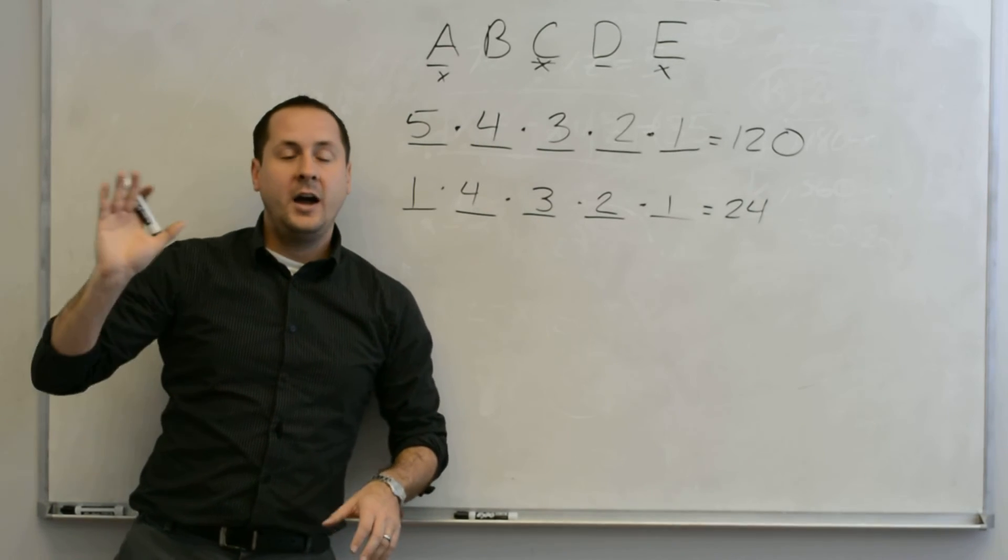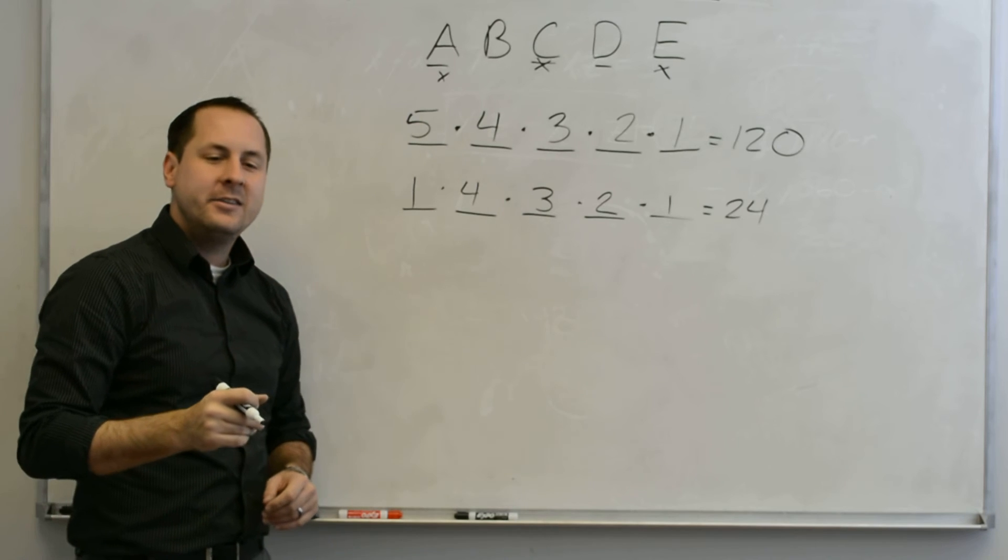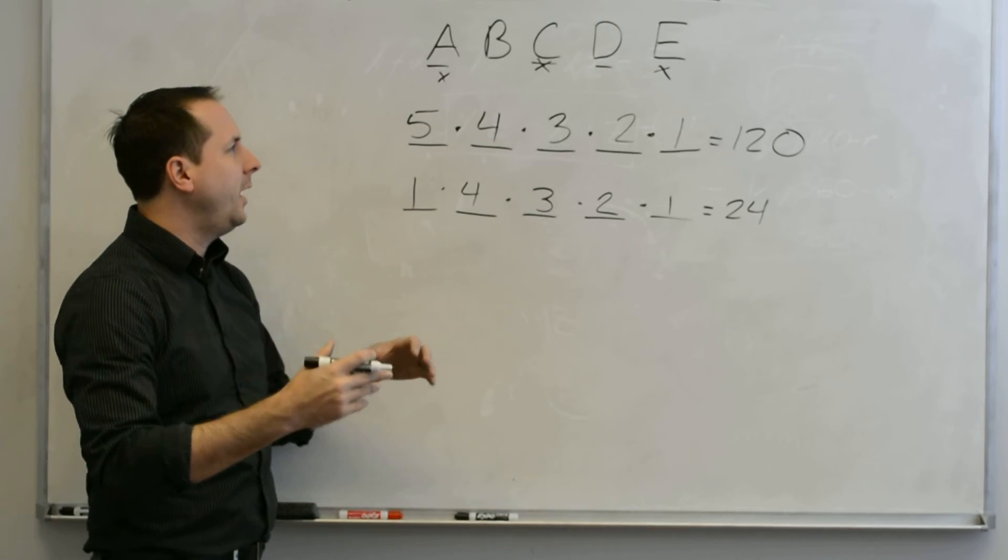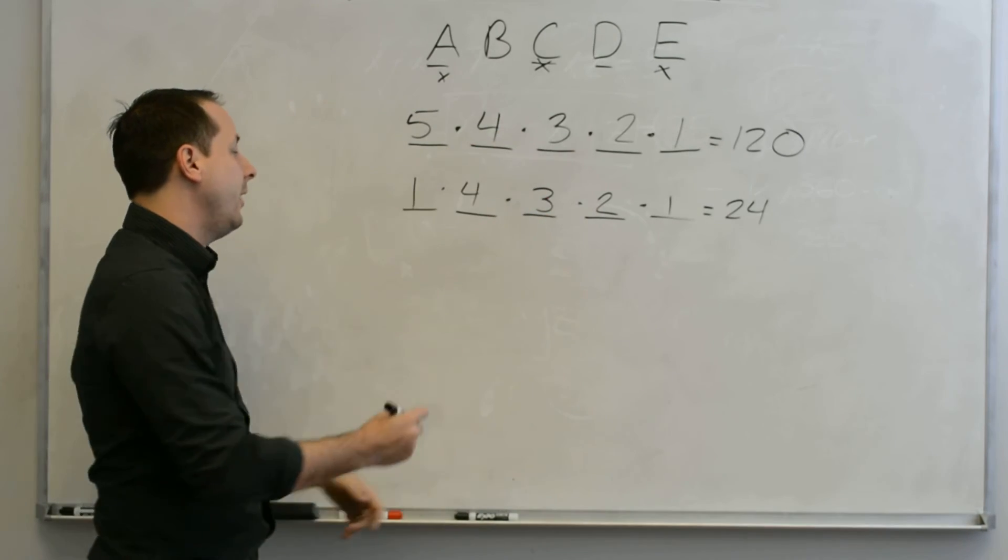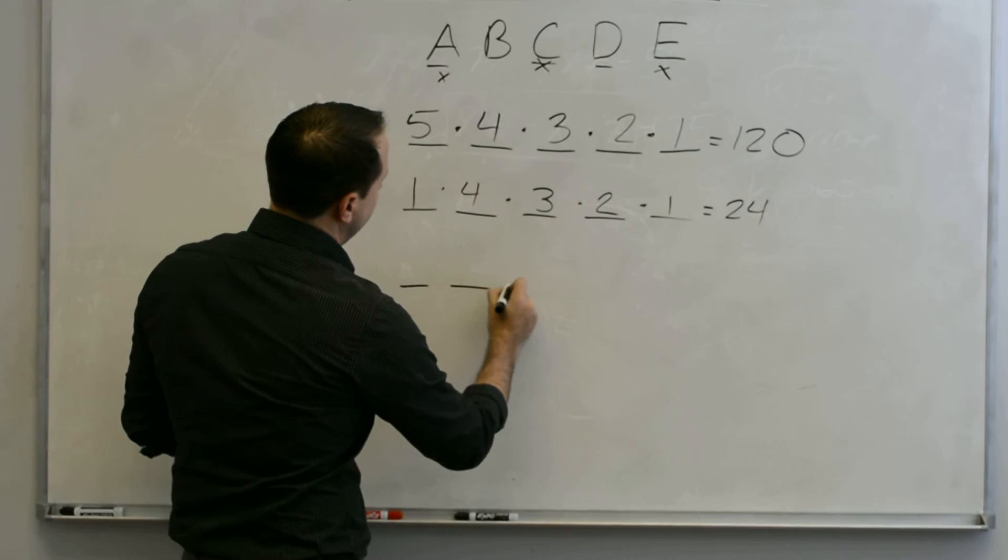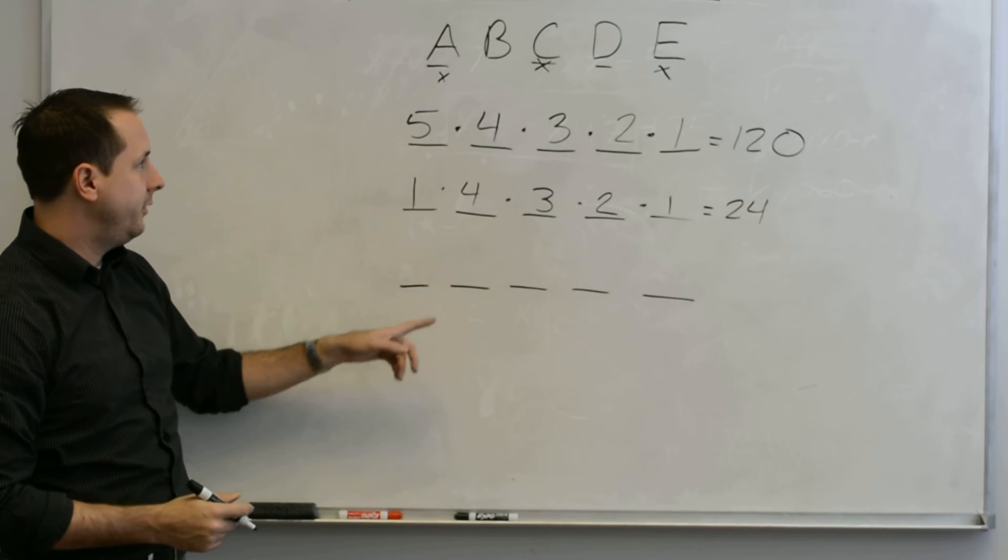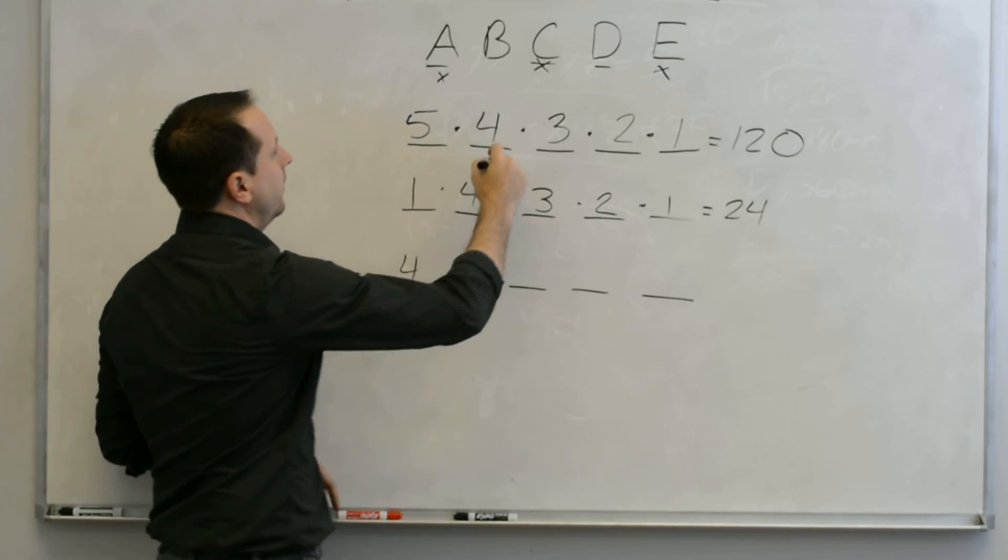One of the most complicated things that they will ever ask you about is to have multiple exceptions. So they'll ask you how many ways can you arrange these so that C is never first or last. As long as you handle your exceptions the same way, then it's pretty easy to do. If C can't be first, there are four options for it.